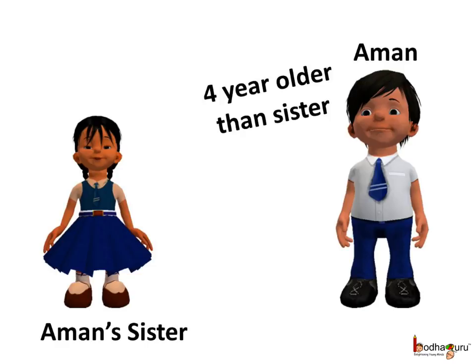We are constantly solving many equations every day without even realizing it. For example, Aman is 14 years old. His sister is 4 years younger than him. For this we can calculate his sister's age. We are solving an equation here too.